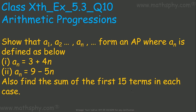This question says: show that a1, a2, up to an form an AP, where an is defined as below. The first case is where an equals 3 plus 4n, and the second case is where an equals 9 minus 5n. We also have to find the sum of the first 15 terms in each case.